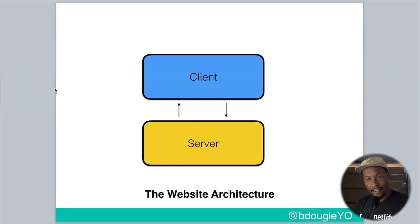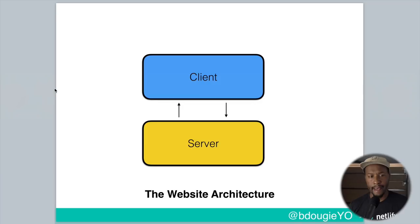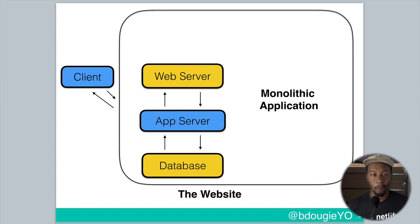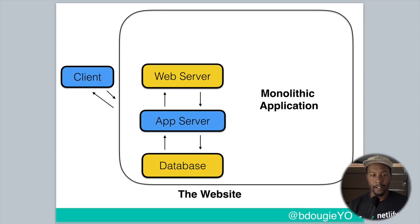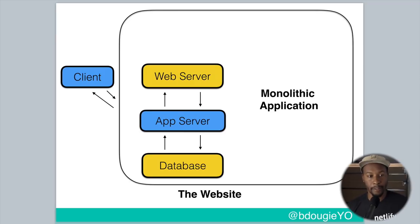I do want to take a chance to explain in more depth how we got here. Basically, what we're looking at is the normal website architecture: you have a client and a server. That server usually isn't simple — it normally looks like a monolithic application structure. Not only do you have what you see on the browser, but underneath you have a web server, an app server or API server, as well as a database.